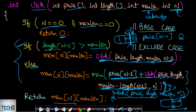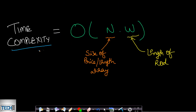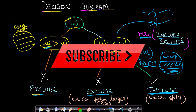After computing all cases, we return whatever is stored in the memoization array at index n and the current capacity. Using memoization reduces the time complexity from exponential to polynomial. The overall time complexity is O(n × W), where n is the size of the length/price array and W is the rod length. Since both equal n here, the time complexity is O(n²). If you have any doubts, feel free to comment below. Like, share, and subscribe to watch more programming videos.